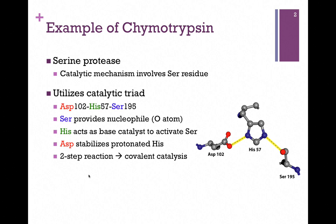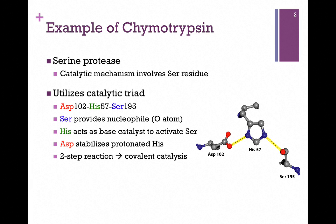Here we have illustrated the catalytic triad that's part of the active site, pictured in the ball and stick model on the lower right. We have aspartate-102, histidine-57, and serine-195. The numbers indicate their position within the primary structure, and you can see they're widely separated from one another in the primary structure. Yet when the enzyme adopts its final tertiary fold, these amino acid residues are perfectly positioned within the active site to carry out their functions. It's a really good example of how protein structure is so vital for function. You need to know each of these residues and what their roles are in the catalytic mechanism.